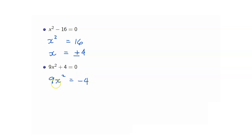But since we are solving for x, we have to divide both sides by 9. But what will we get here? x squared is equal to negative 4 over 9. Can the square of a number be equal to a negative number? No. So we say no solution, or in particular, no real solution.